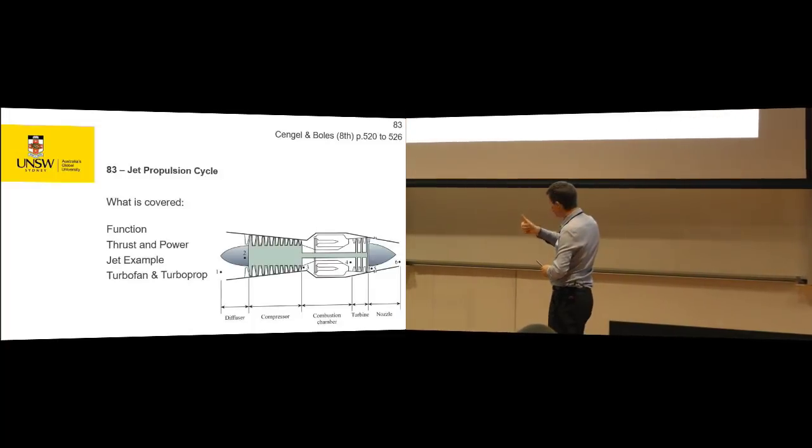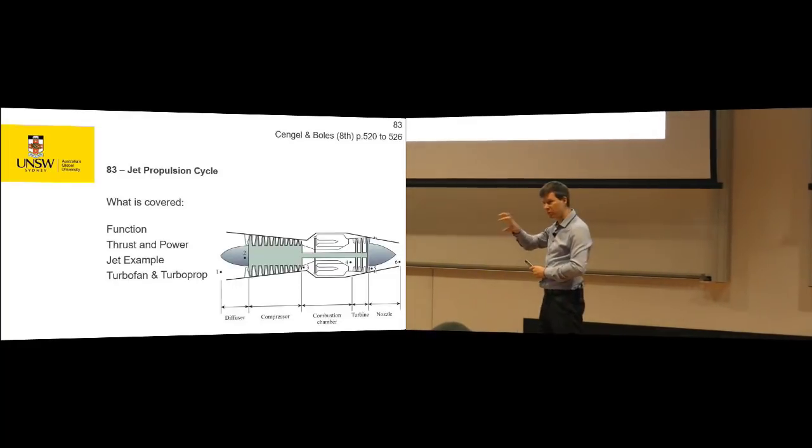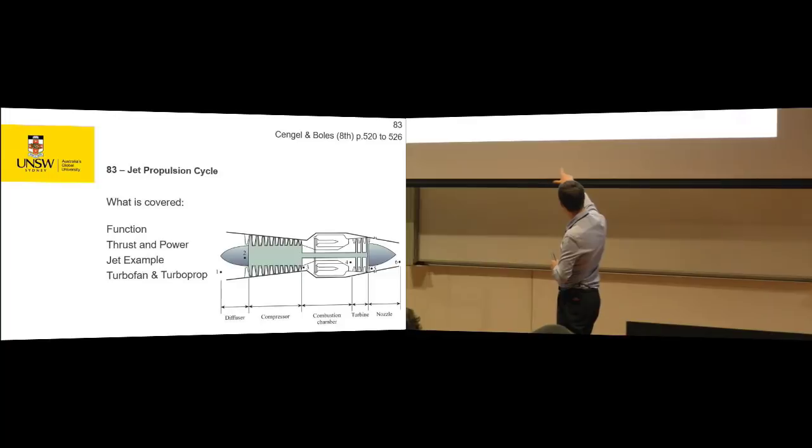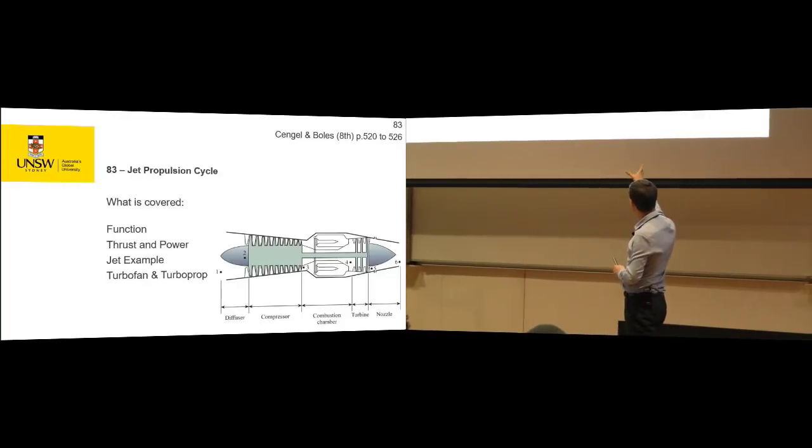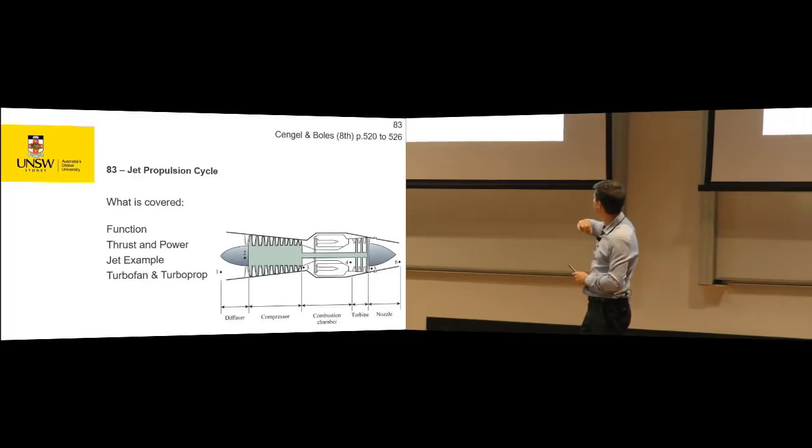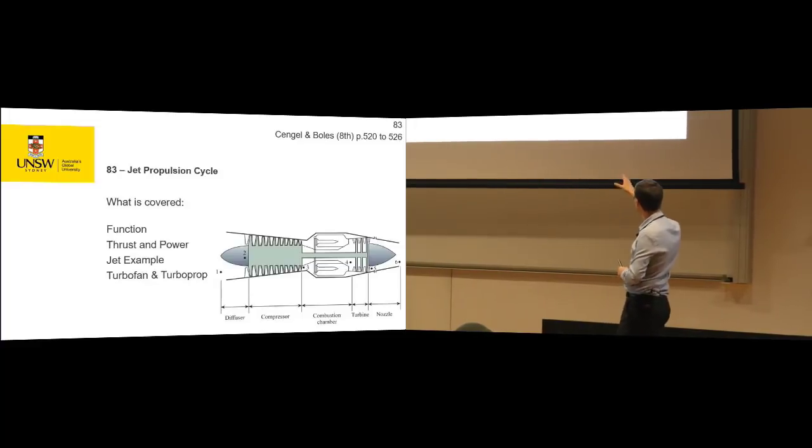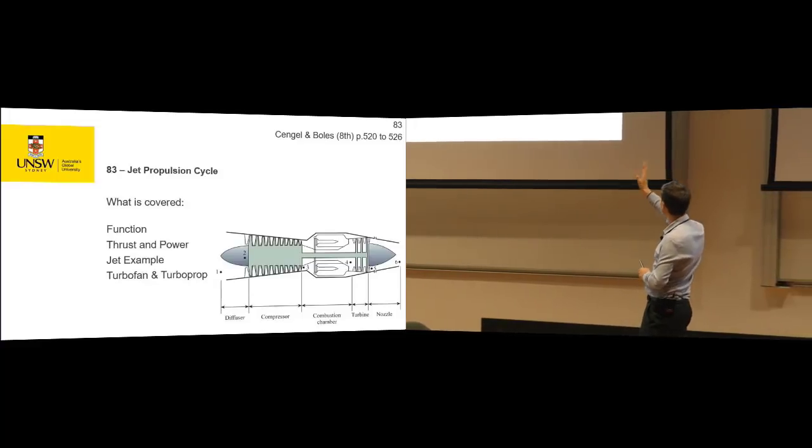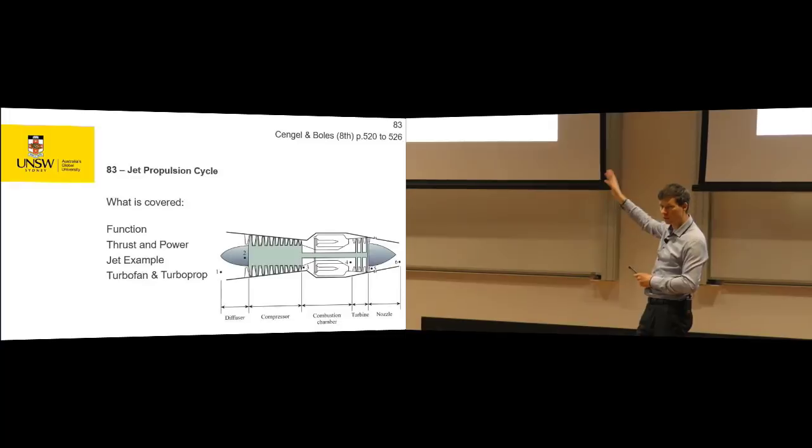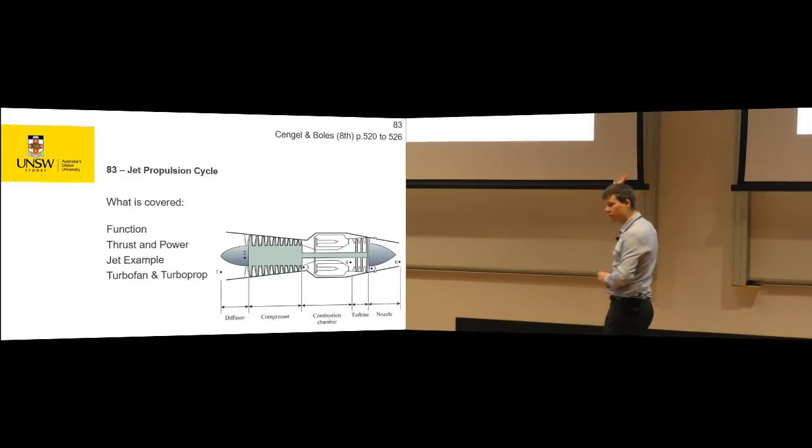One, you're at elevation generally, and two, you're generally traveling fast. So we've got some relative velocity that we can do something with. You're taking it through a diffuser to get to state point two, taking it through a compressor state point two to three, then we combust it. So from state point two to state point five looks like what we're used to. And then we've got a nozzle at the end.